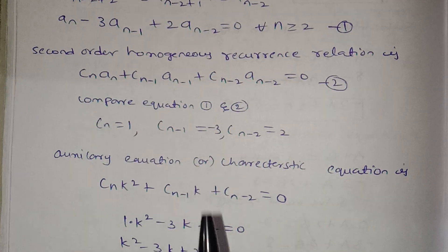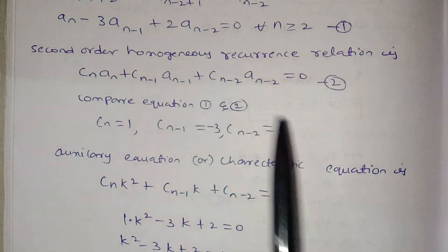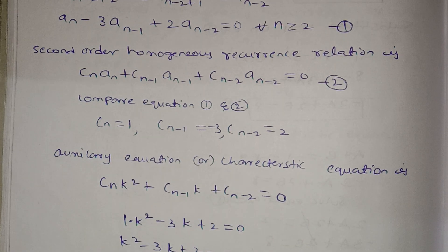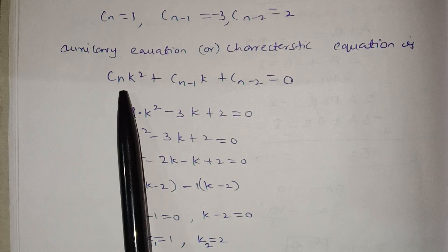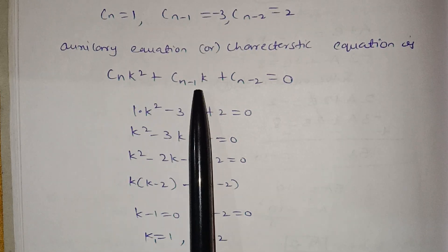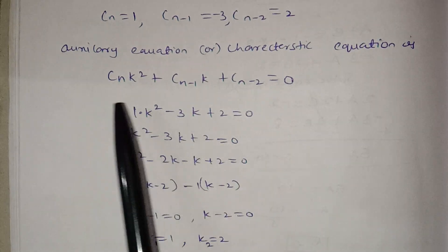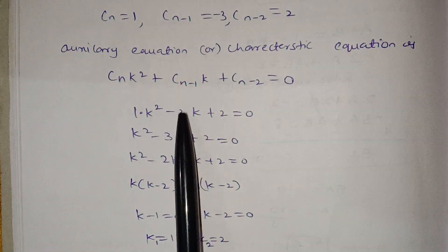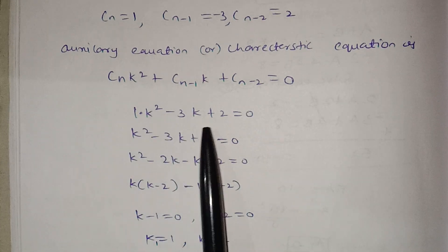So the coefficient values are: c(n) equal to 1, c(n-1) equal to 3, c(n-2) equal to 2. The general auxiliary equation is: c(n)·k² plus c(n-1)·k plus c(n-2) equals to 0. Substituting: 1·k² minus 3·k plus 2 equals to 0. So k² minus 3k plus 2 is equal to 0.